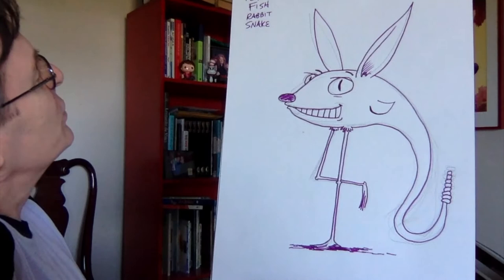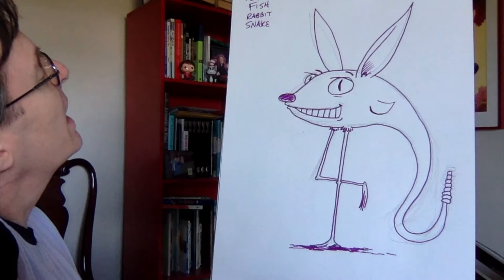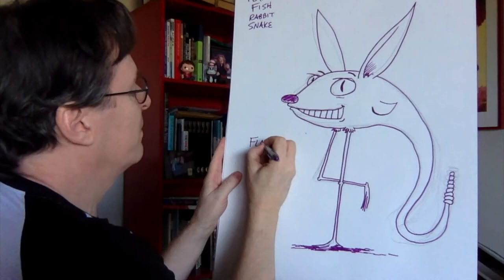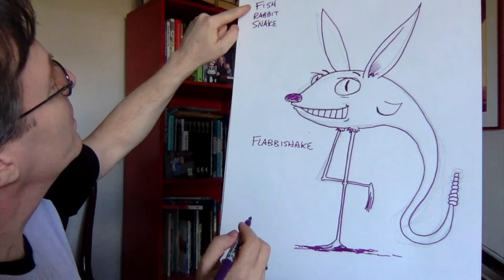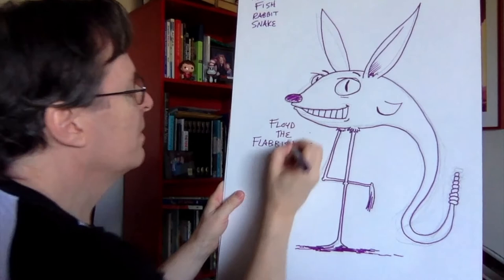All right. What are we going to call them? Flamingo, fish, rabbit, snake. Flamishake, flamishake. That's pretty good. You've got fla from flamingo, b from rabbit, ish from fish, and ake from snake. Flamishake. This is Floyd. Floyd the flamishake.